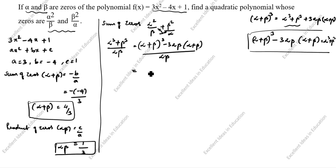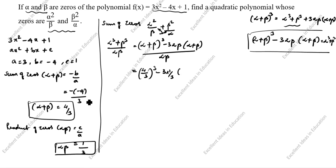Substituting the values: (4/3)³ - 3 × (1/3) × (4/3), all divided by (1/3). That gives 64/27 minus 3 × (1/3) × (4/3), divided by 1/3.